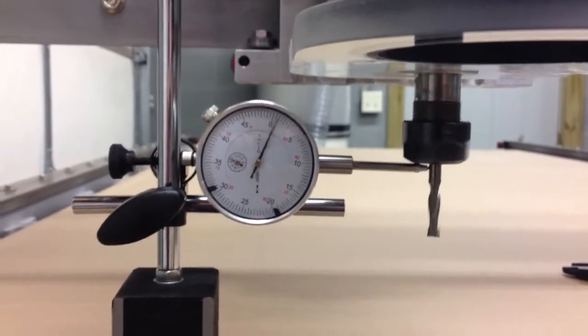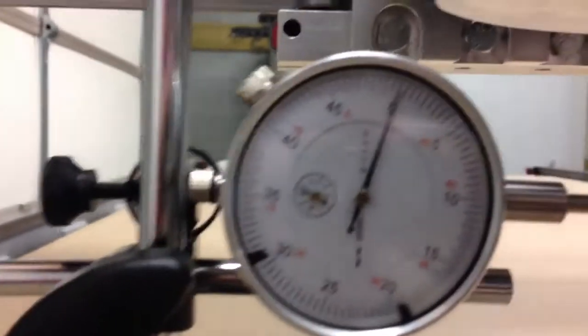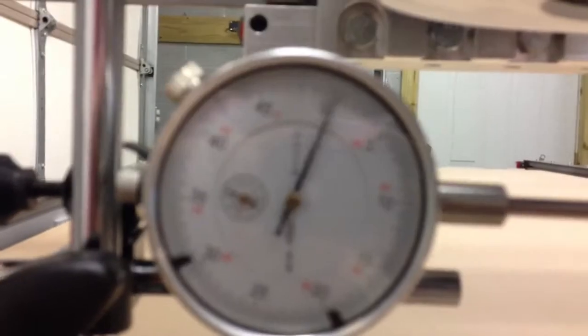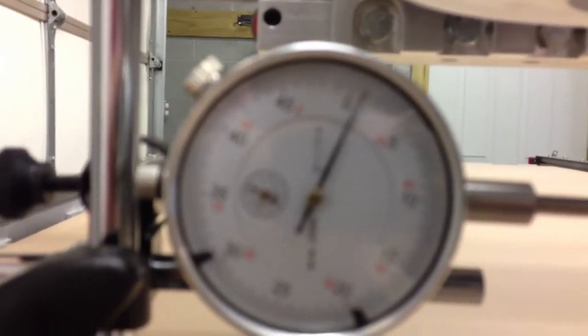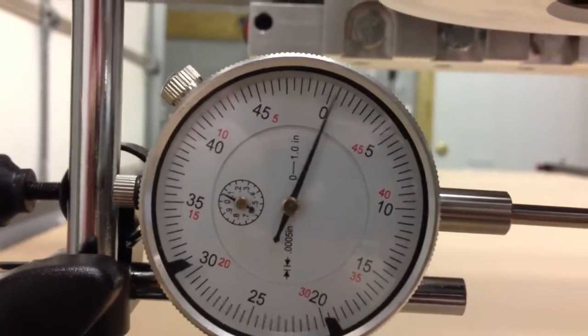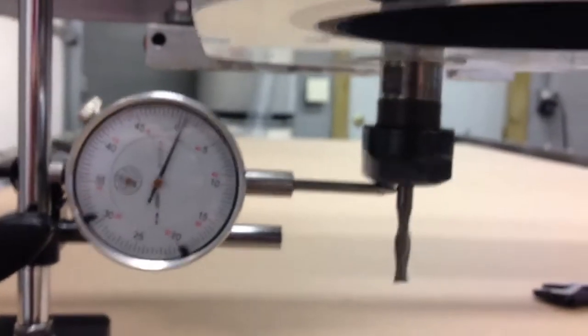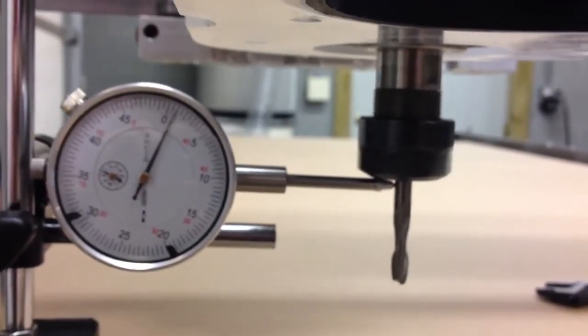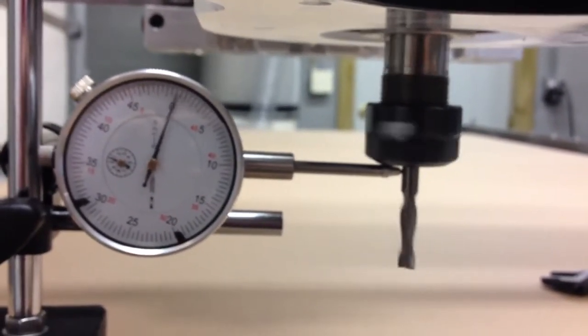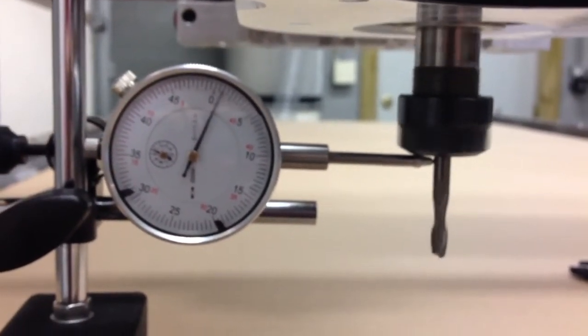As you can see, I'm checking the runout of the spindle. It looks like it's holding just about a thousandth of an inch to the bit. That's the sum of the runout of the collet and the bit and the spindle. That's not too bad.